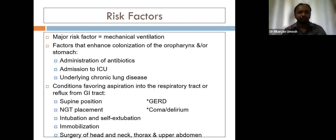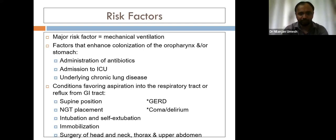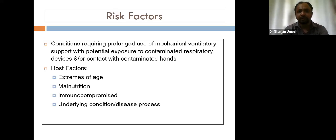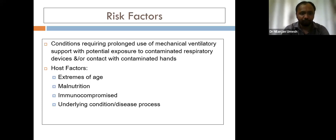The major risk factor for VAP is mechanical ventilation. Other factors include those that enhance colonization of the oropharynx and stomach — such as antibiotic administration, ICU admission, and underlying chronic lung disease. Conditions favoring aspiration include supine positioning, nasogastric tube placement, GERD, coma, delirium, intubation, immobilization, and head, neck, thoracic, or abdominal surgery. Host factors include extremes of age, malnutrition, and immunocompromised states.